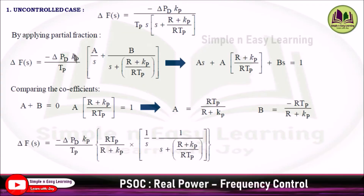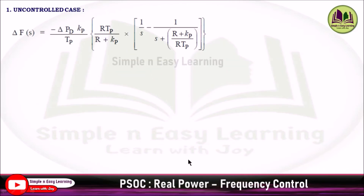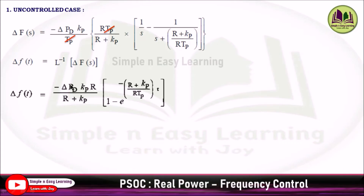Substituting A and B into the main equation: since A and B are the same except for sign, taking R times TP divided by R plus KP as common gives 1/s minus 1 divided by (S plus (R plus KP) divided by R times TP). Cancelling TP and taking the Laplace inverse, the constant term becomes minus del PD times KP times R divided by R plus KP, and the inverse of 1/s is 1, while the inverse of 1/(S plus this term) is e to the power minus (R plus KP) divided by R times TP times T.